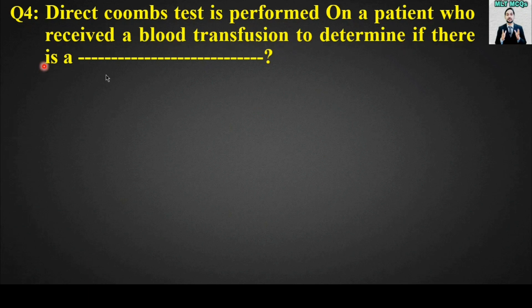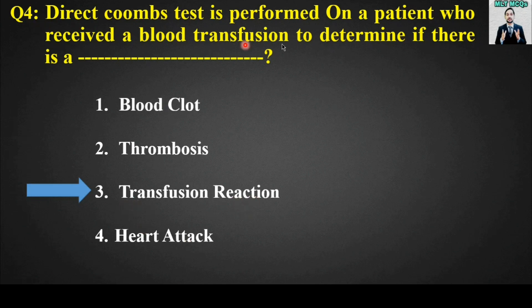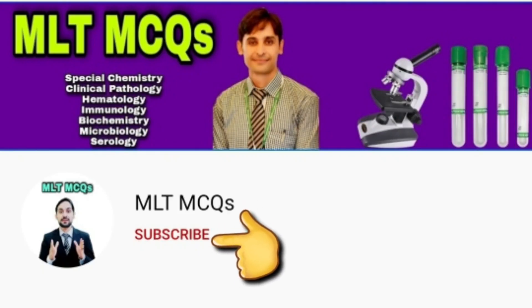MCQ number four: The direct Coombs test is performed on a patient who received a blood transfusion to determine if there is a blank. Options: blood clot, thrombosis, transfusion reaction, or heart attack. The right answer is option number three — transfusion reaction. The direct Coombs test is performed to determine if there is a transfusion reaction.